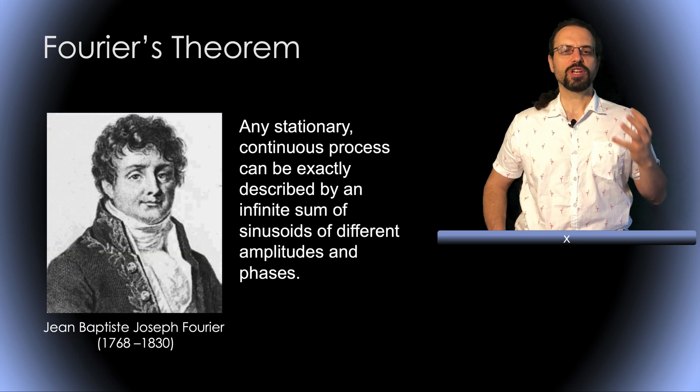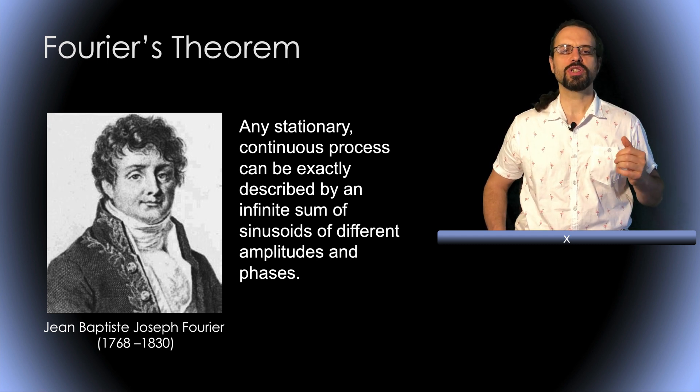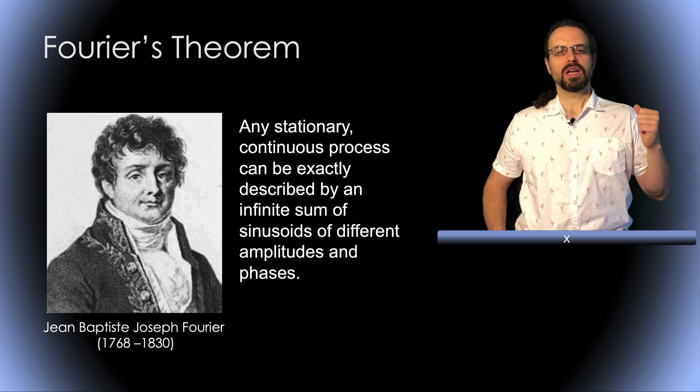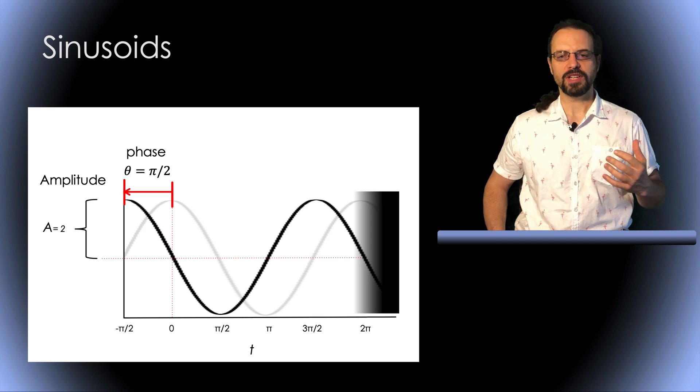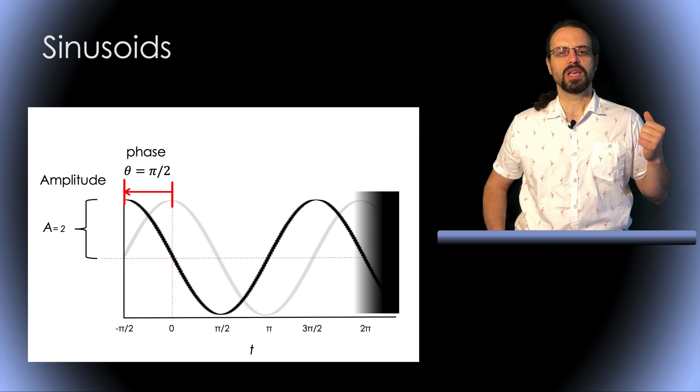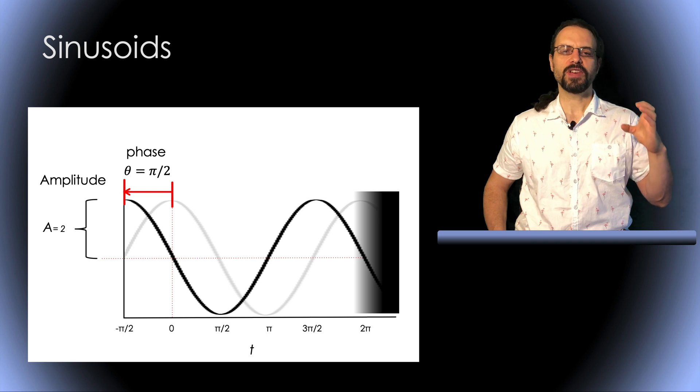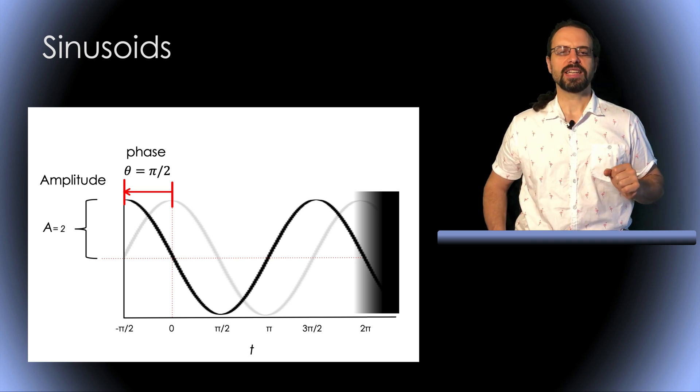So Fourier stated that any stationary continuous process can be exactly described by an infinite sum of sinusoids at different amplitude and phases. So let's first define what we mean by amplitude and phase of sinusoid. Here is a sinusoid and the amplitude is the height on the y-axis and the phase is the shift of the sinusoid on the x-axis.